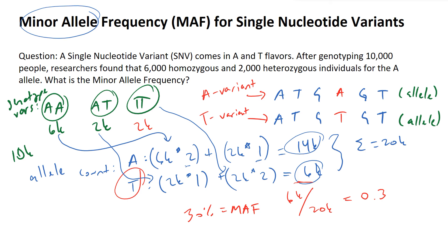If you're ever working with alleles where you have more than two variants — in theory you could have four total variants: A, T, G, or C — but in this case we only had two. If you had three variants, your minor allele frequency is based on the second most common one. After calculating the number of alleles in your genotyped population, you look at whichever one is the second greatest and calculate your MAF based on that.